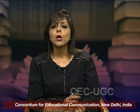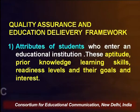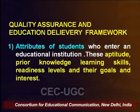The first aspect of the quality assurance and education delivery framework is the attributes of students who enter educational institutes. These include a good aptitude, some prior knowledge, learning skills and abilities, readiness level, and their goals and interests. If the student has these attributes in place, there is no system which cannot deliver, and they will make a substantial difference in quality assurance and the delivery framework.